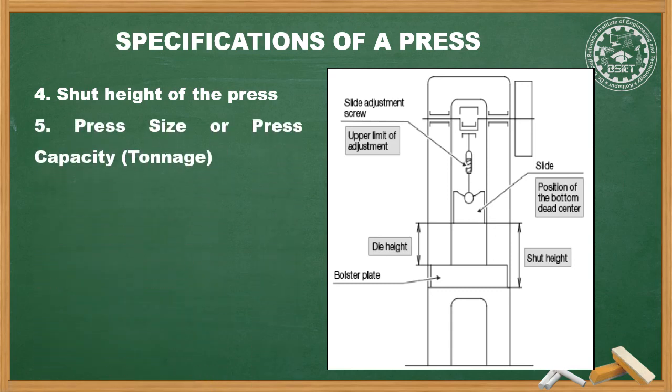The last specification is press size or press capacity in tonnage — the capacity or rating of a press. There are also other specifications such as number of strokes per minute, which indicates the speed of the RAM that the press works upon, given in RPM. These are the specifications of press.